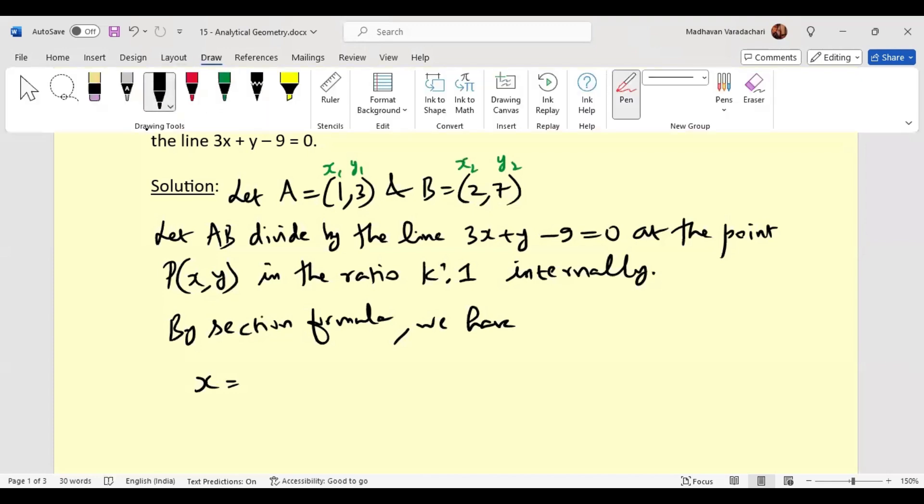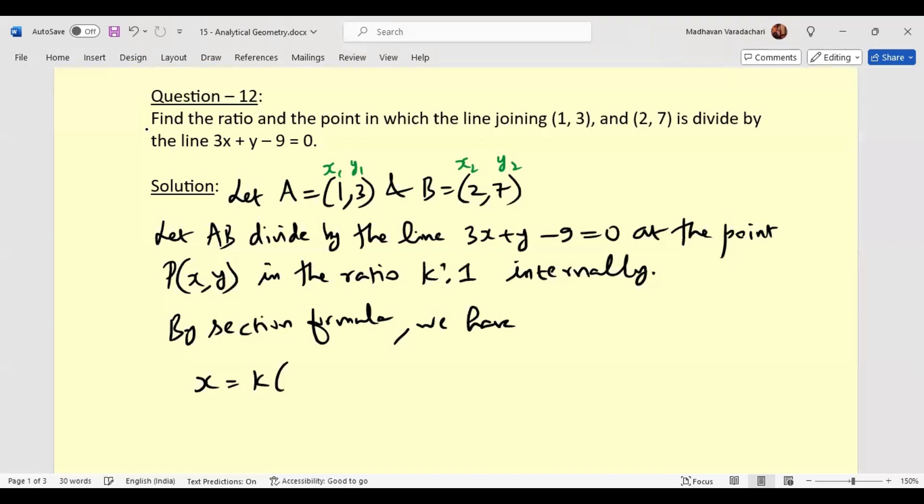So we can rewrite this as (2k plus 1) by (k plus 1). Then we will have y as mx2, means k times 7 plus n, that is 1 times y1, by k plus 1. That can be rewritten as (7k plus 3) by (k plus 1).